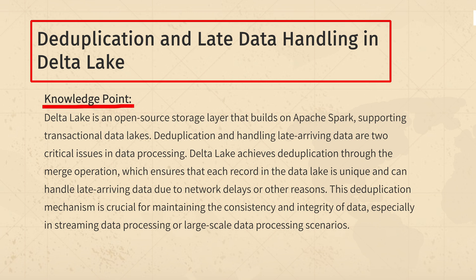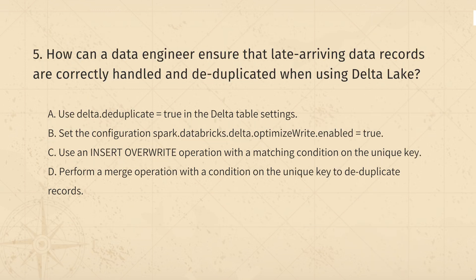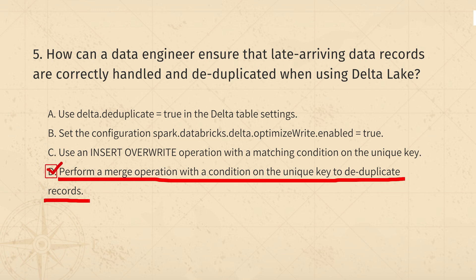The knowledge points of this question are: Delta Lake ensures each record is unique and handles late data using the merge command. This keeps your data accurate and consistent, which is crucial when dealing with large or streaming data. So, the correct answer is: use a merge with a unique key to handle late data and avoid duplicates.